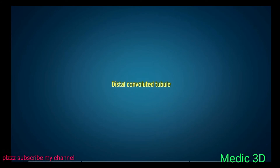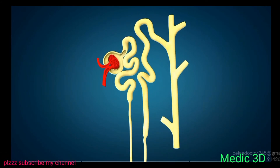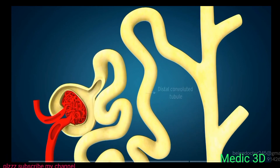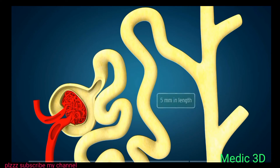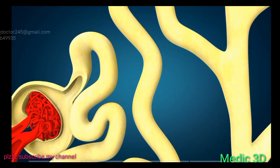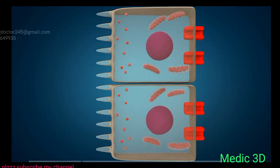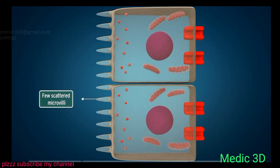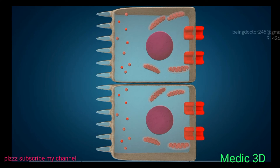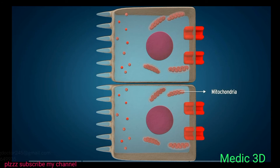The distal convoluted tubule (DCT) begins immediately after the thick ascending limb and is 5 mm in length. The DCT is characterized by low cuboidal epithelium with few scattered microvilli on the apical surface. These cells must also pump ions against their concentration gradient, so large numbers of mitochondria are present, though fewer than in the PCT.